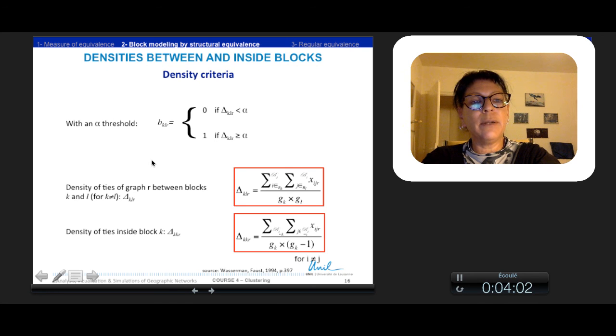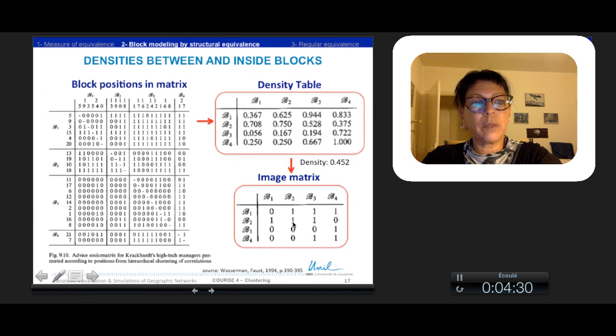Also, densities can be calculated for each couple of blocks and inside each block and be used to assign 0 if the density is lower than the threshold and 1 if the density is higher. So the density is the total number of observed ties divided by all possible. The density tables between and inside blocks measure the density of blocks of cells. The values in the tables are the ratio of ties of the total possible ties, excepting self-ties in the diagonal.